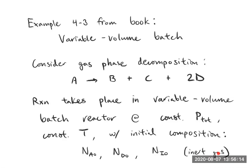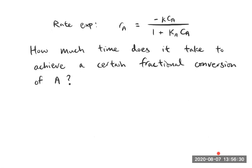We're also given a rate expression. It has a form we'll dive into more soon in Chapter 5: minus k·C_A over (1 + K_A·C_A). What we want to know is how much time it takes to achieve a certain fractional conversion of A.